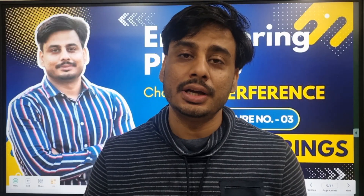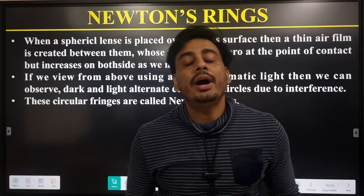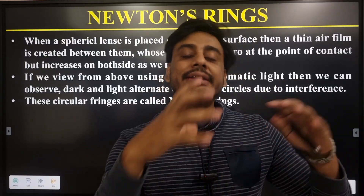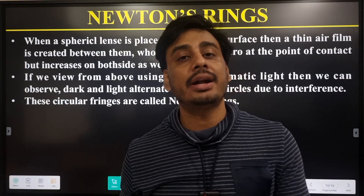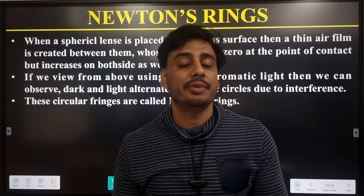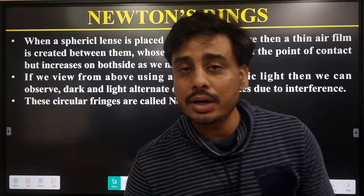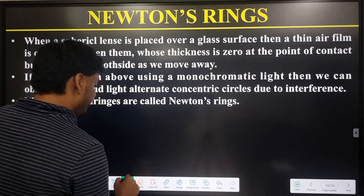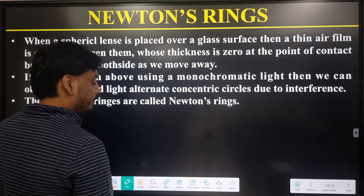In the last video I gave you some numericals, so let me know in the comment section if you have finished those or if you face any problem with them. So let's start the Newton's ring part. When light falls on a thin film, there will be interference between the reflected and transmitted rays of light, and we will get interference patterns in the form of circular concentric rings.